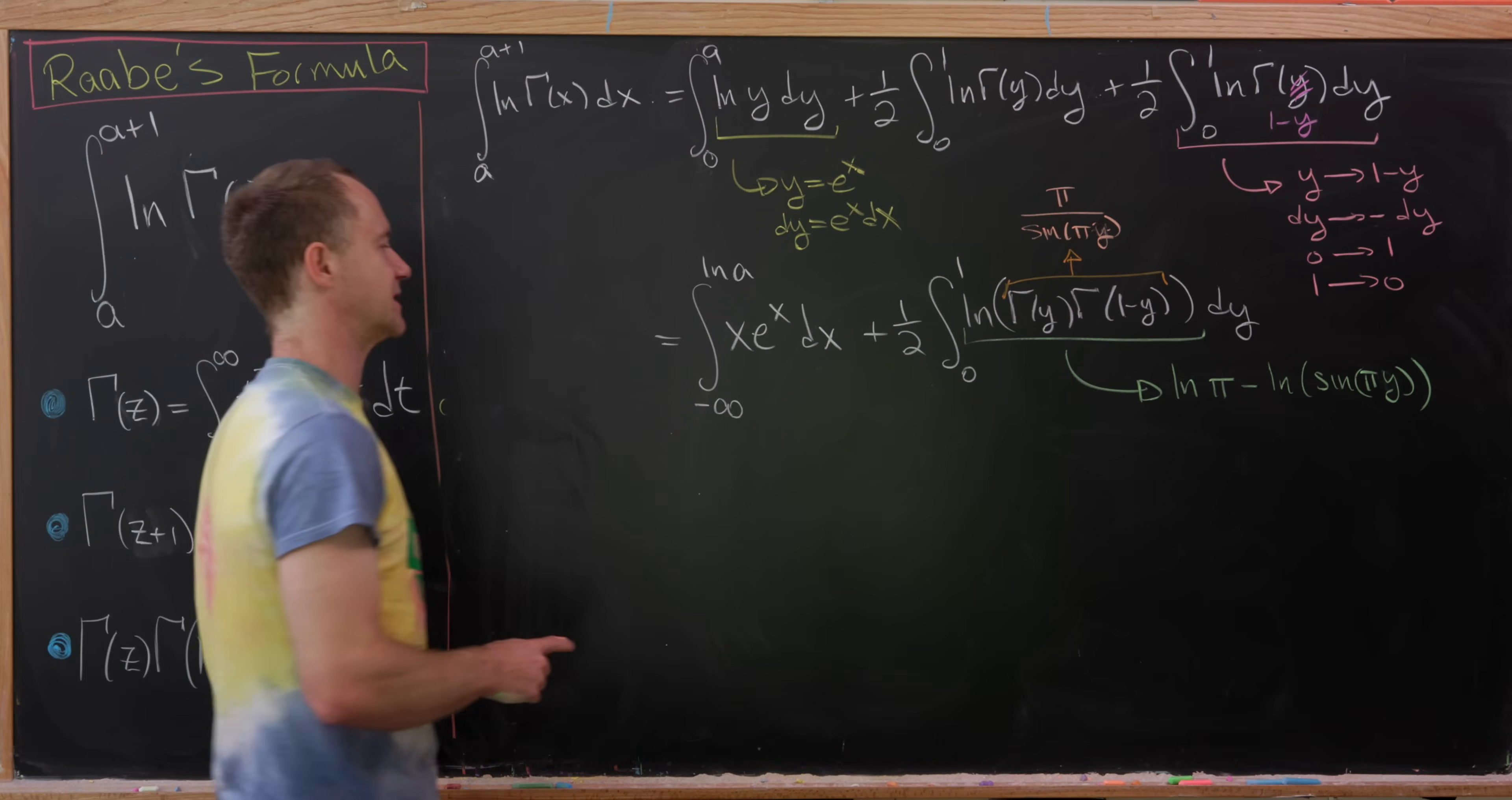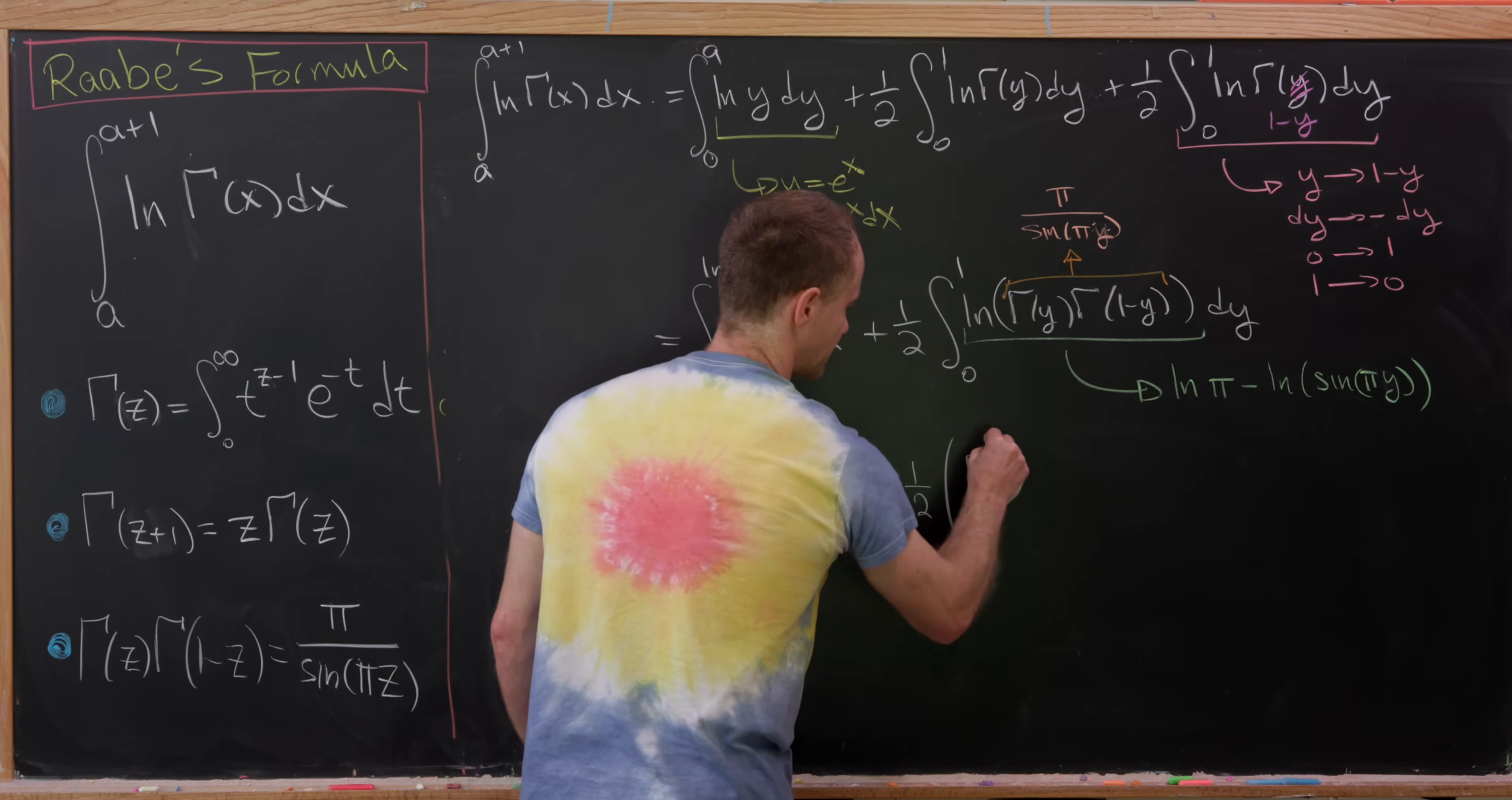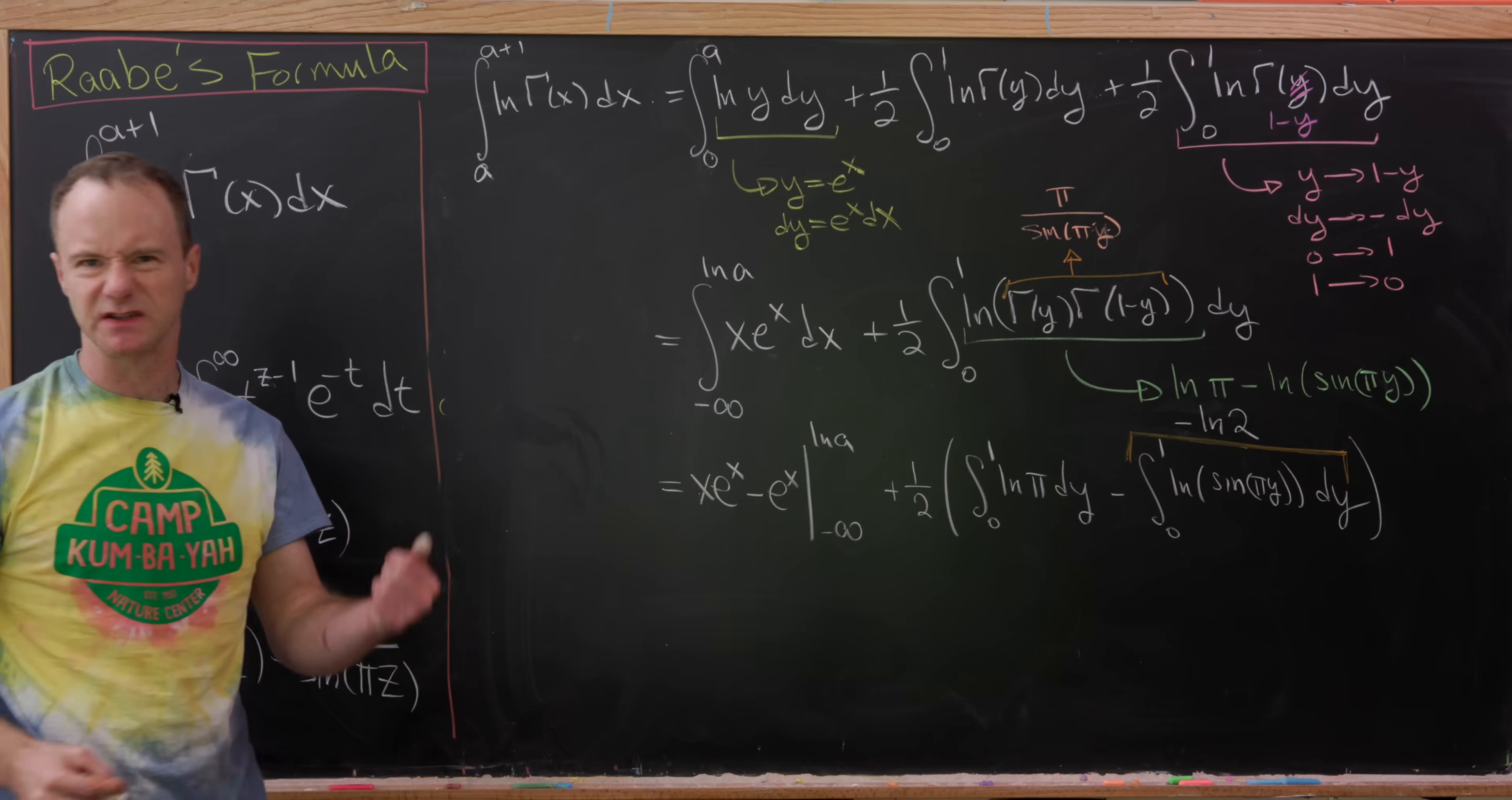Okay, so now let's expand everything out and see what happens. So we can easily take the antiderivative of x e to the x by using integration by parts, maybe tabular integration by parts if you like. That'll give us x e to the x minus e to the x. We're going to evaluate that from minus infinity up to log a. And then we'll have plus one half times the integral from 0 to 1 of log of pi dy minus the integral from 0 to 1 of log of sine times pi y dy. But now we're going to do a bit of a cheat. This has a well-known value, and that special value is minus natural log of 2.